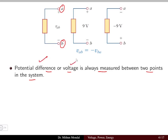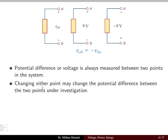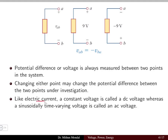The potential difference or voltage is always measured between two points in the system. We require two points A and B to measure the potential difference. If only a single point A exists, the other reference point will be ground. Changing either point may change the potential difference between the two points under investigation.